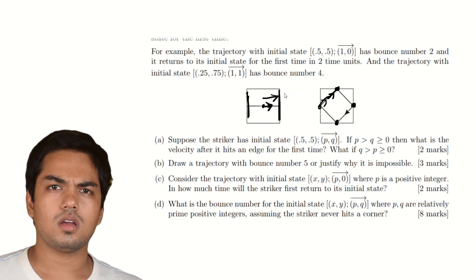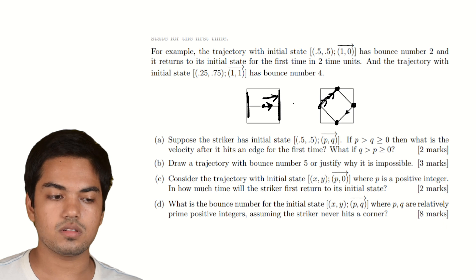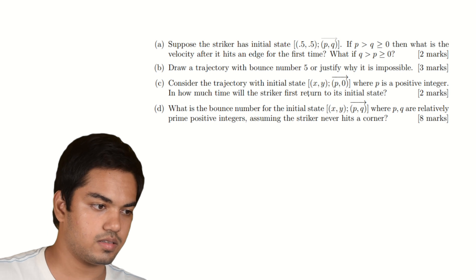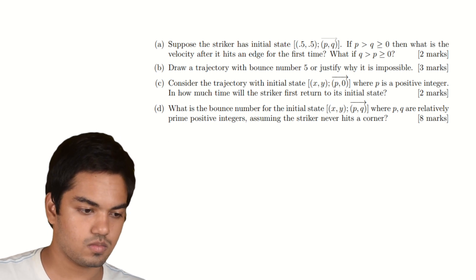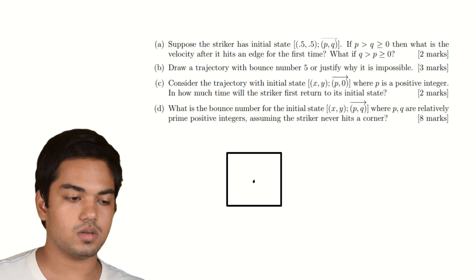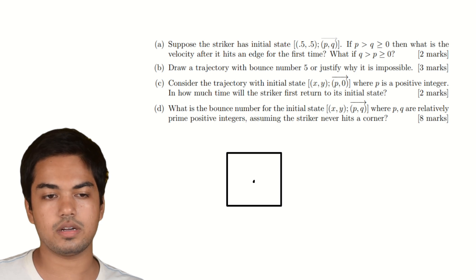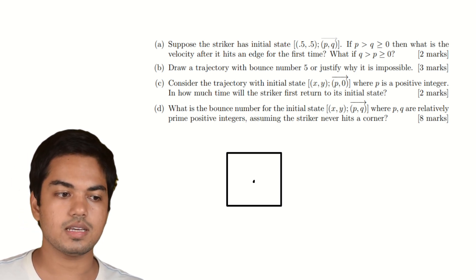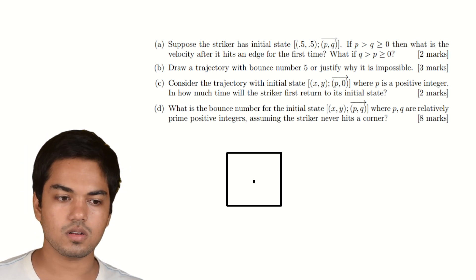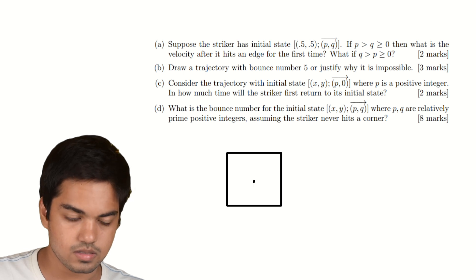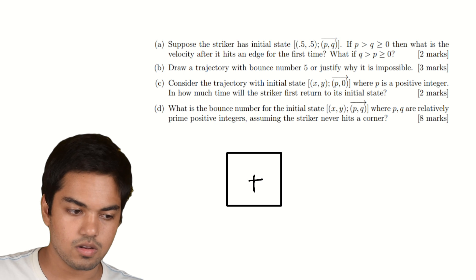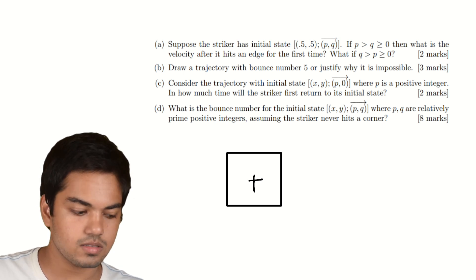Question 1: suppose the striker has initial state (0.5, 0.5) with velocity (p, q). You're starting at the center. If p > q ≥ 0, what is the velocity after it hits an edge for the first time? And what if q > p ≥ 0? If p > q, the velocity vector in the first quadrant lies below the diagonal — so the striker will head toward the vertical wall.